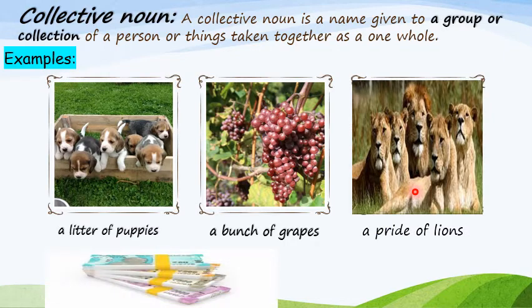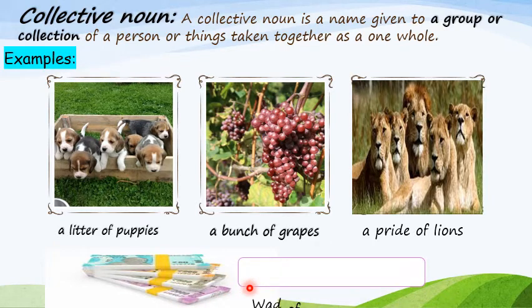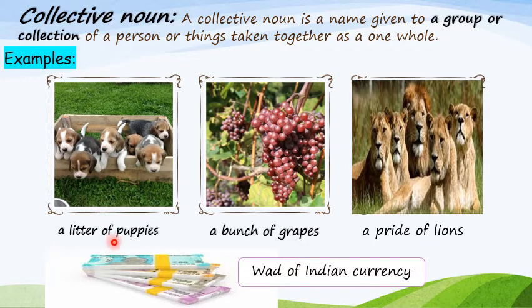Now let's take another example. What do you see here in the picture? Indian currency notes in a bundle. Yes. So how many are there? Difficult to count. Yes. So what do we call it? A wad of Indian currency. And what do we call a group of ants? An army of ants.